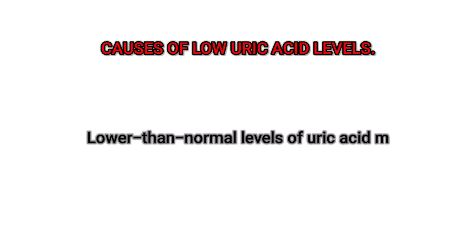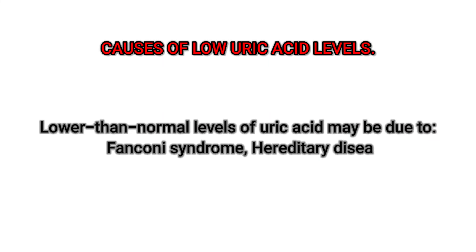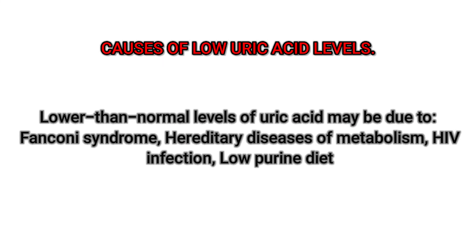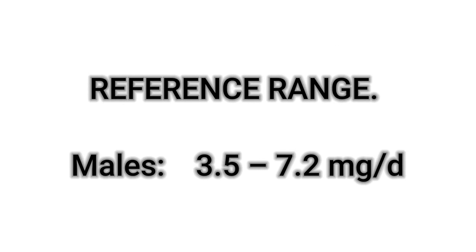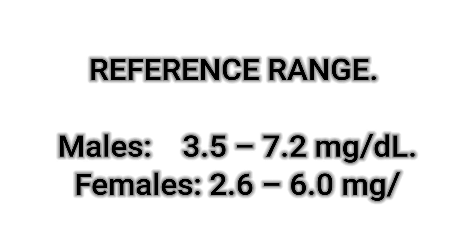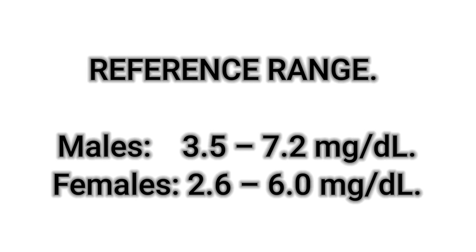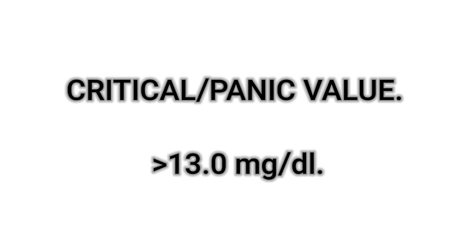Lower than normal levels of uric acid may be due to Fanconi syndrome, hereditary diseases of metabolism, HIV infection, low purine diet, or chronic kidney disease. Reference ranges: males 3.5 to 7.2 mg/dL, females 2.6 to 6.0 mg/dL. Critical panic value: greater than 13.0 mg/dL.